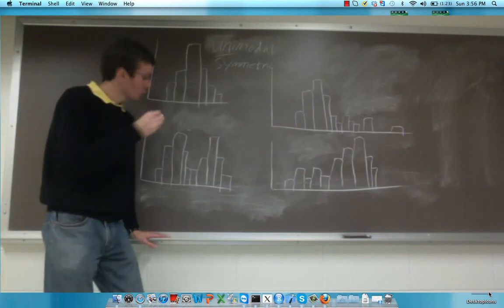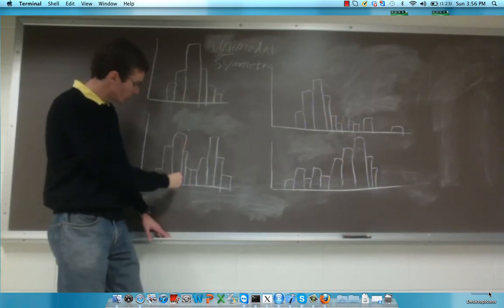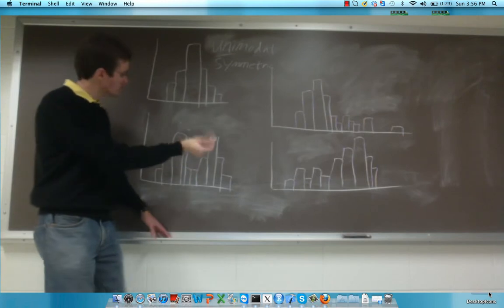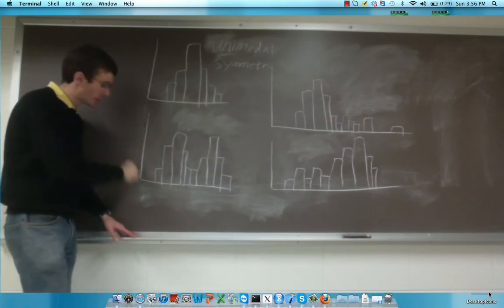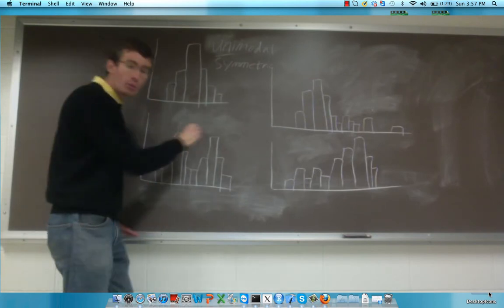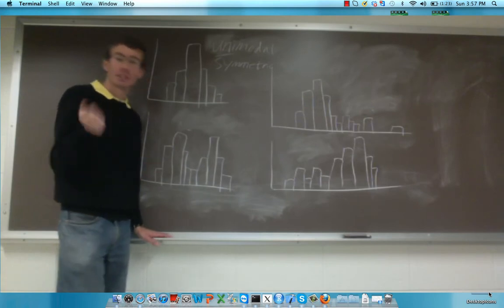However, as we also saw, you can have a distribution that has two clear peaks, or modes. So let's say that we have two values which have an equal number of frequencies. Remember, frequency is on the y-axis here and the actual value is on the x-axis. So if we have two modes that are the same, the mode is not a good measure of central tendency.